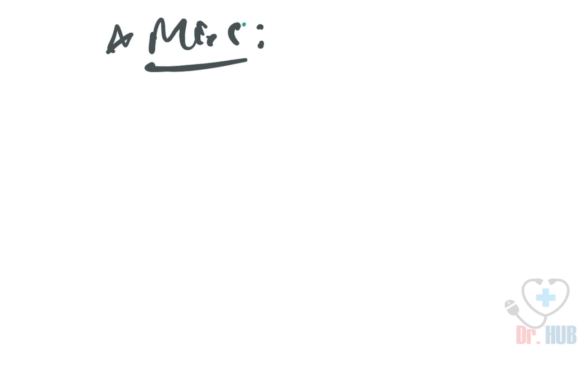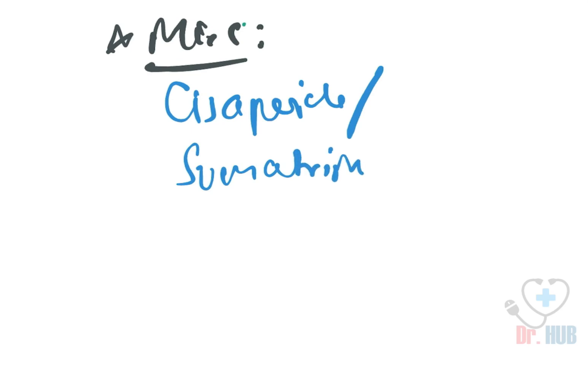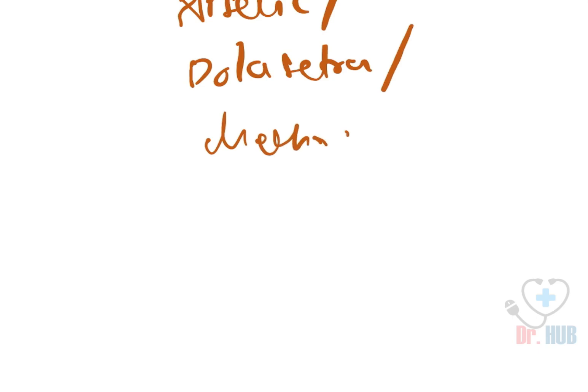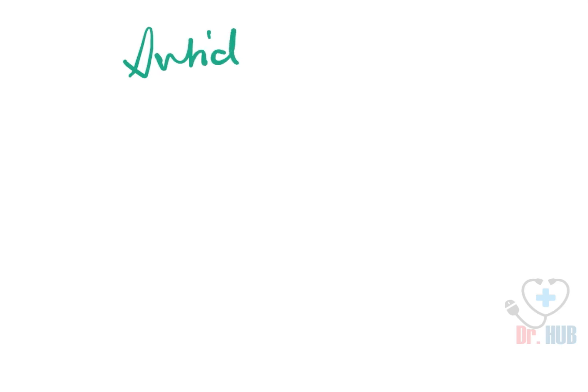Next we look at some miscellaneous drugs causing QT prolongation. This includes cisapride, sumatriptan, almotriptan, arsenic, dolasetron, as well as methadone.